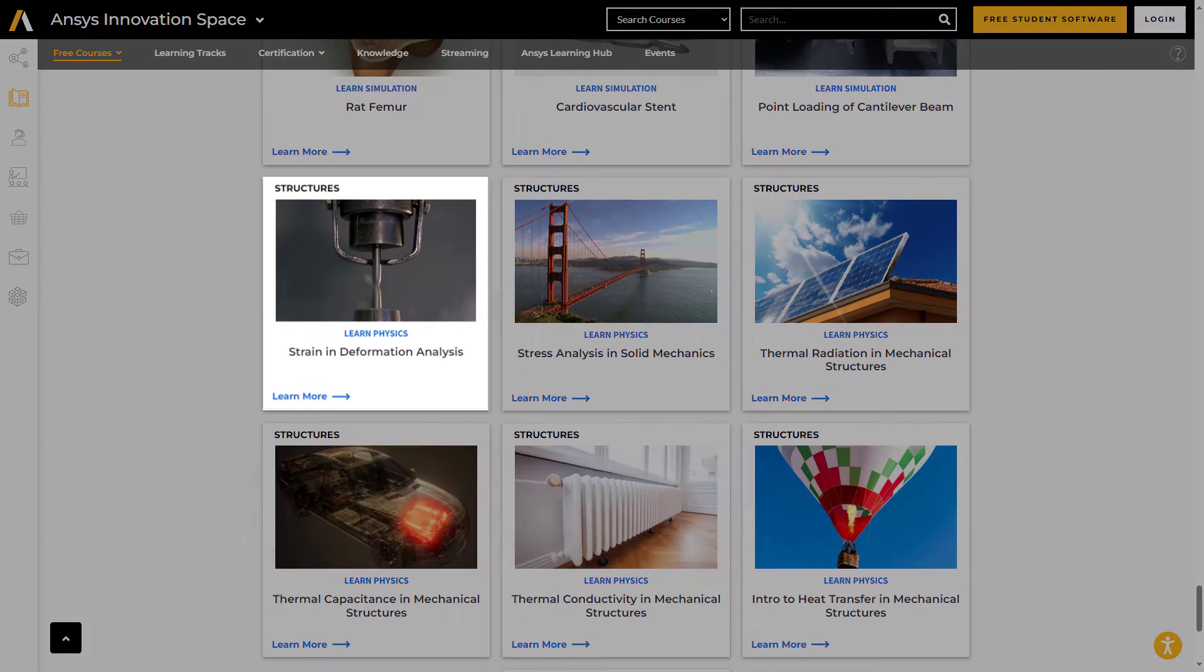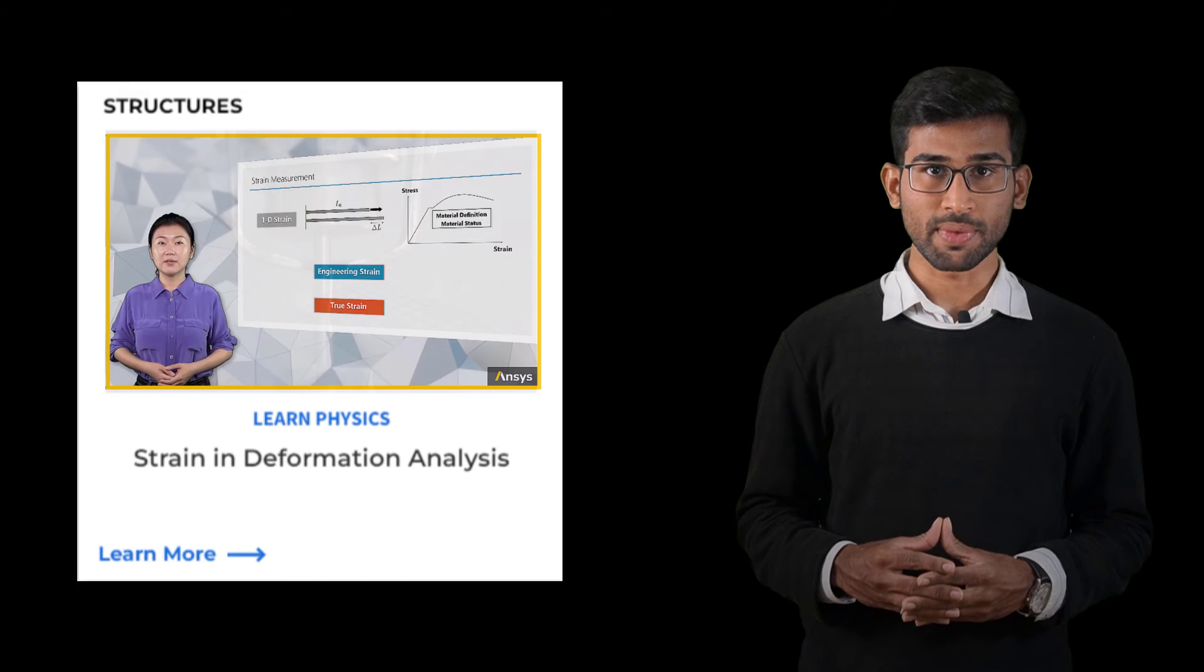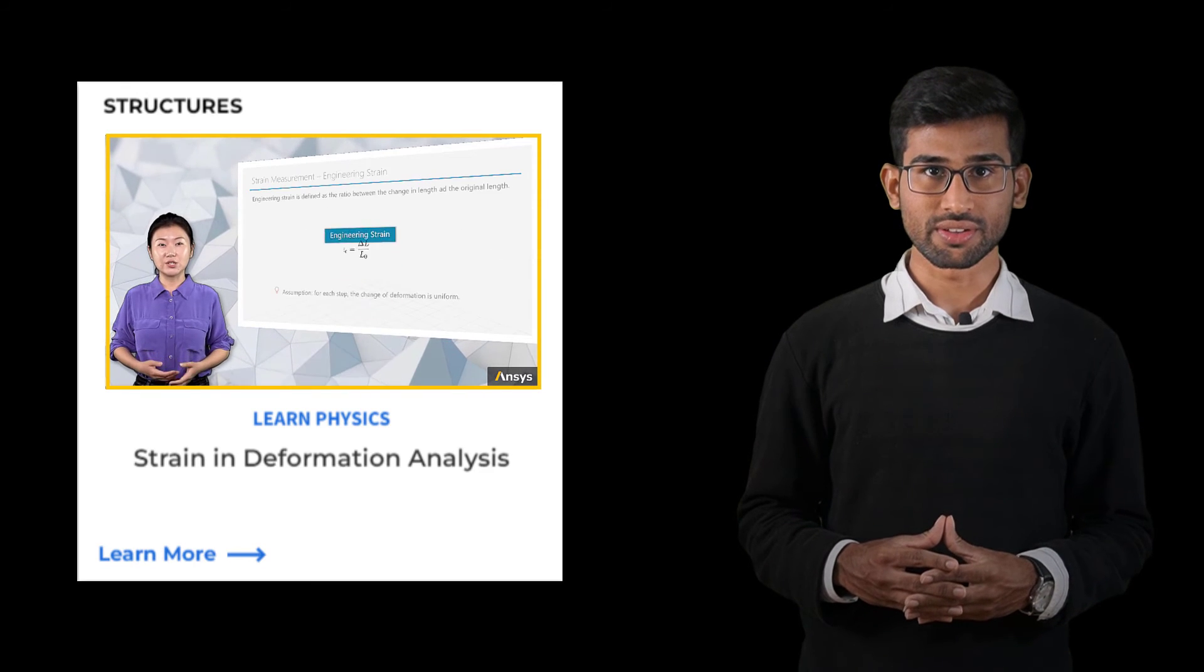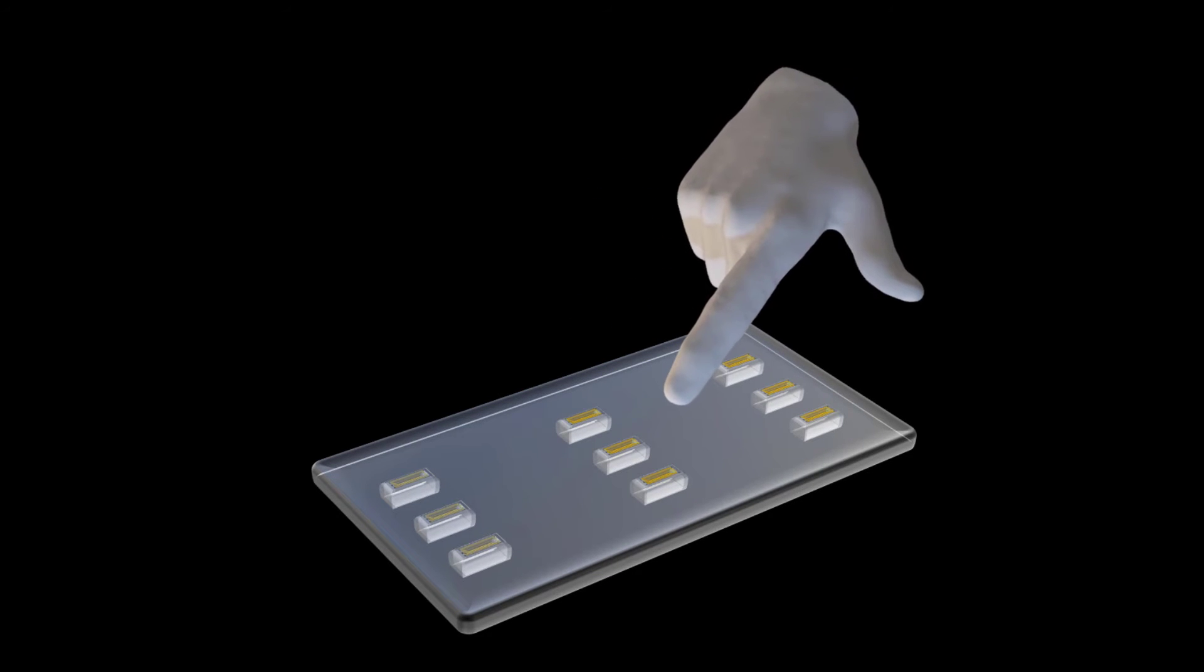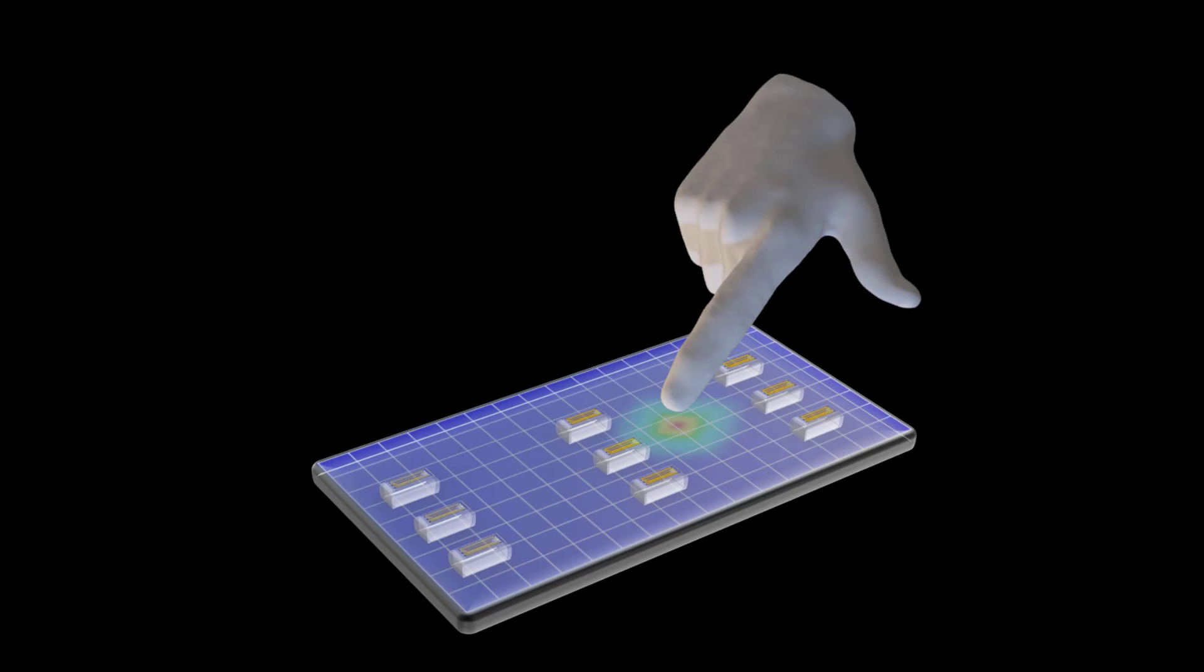For more information on strain, please check out the ANSYS Innovation Course on mechanical strain and deformation analysis. In context of our touchscreen, a small set of strain gauges can be embedded in the screen to detect the amount of pressure applied by the user. This pressure causes the screen to deform slightly, which can be measured as strain at the embedded location.